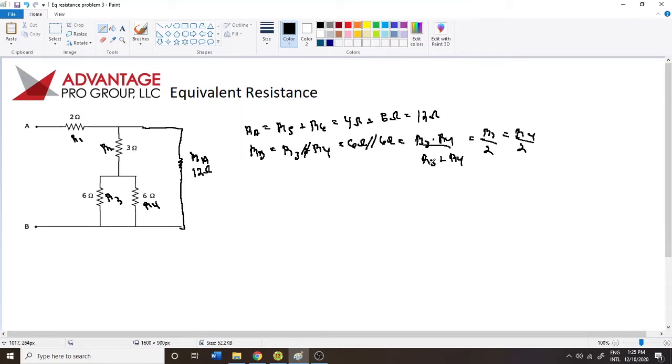So that ends up working out. And the reason that works out is you have 6 times 6, so that's 36. And then you have 6 plus 6, and that's 12. So 36 divided by 12 is going to end up being 3, which is the same as 6 over 2, which is 3. So you have 6 divided by 2, and that's 3 ohms. I'm sorry, divided by 2. It should have been 2 here. I'm making a lot of mistakes today. Let's just erase that. Always go back. 3 ohms. Good.